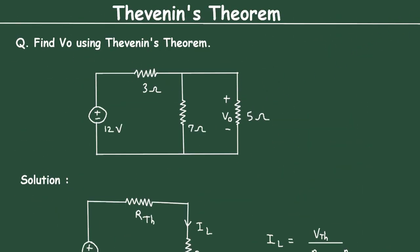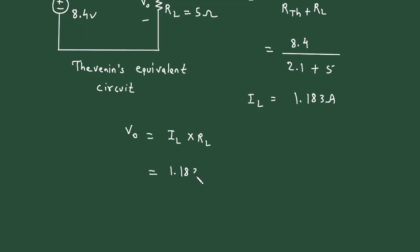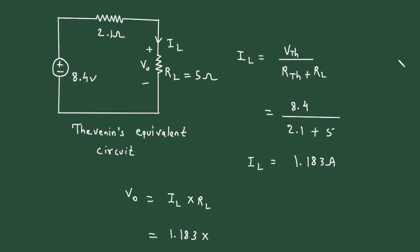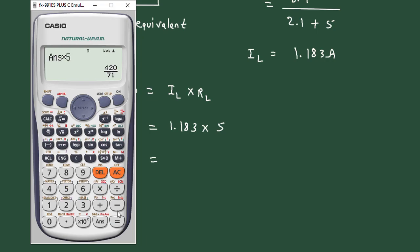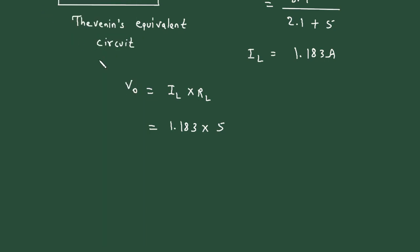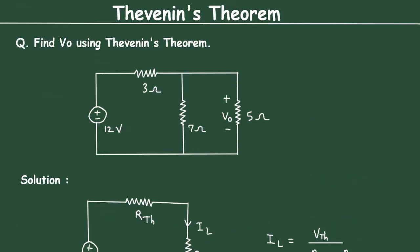This is the value of IL. But what we have to find? We have to find VO. VO is equal to IL into RL. The value of IL is 1.183 multiplied by RL which is 5 Ohm, so it will be 5.91 volts. We can also verify our answer using our simulator app — here we can see we got the answer 5.915 volts, so therefore our answer is correct. Thank you.